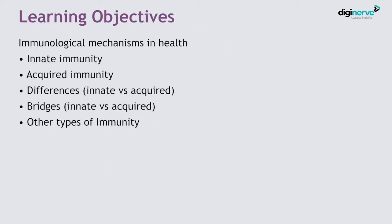Hello students, welcome to today's session. We are going to start today's immunology section, and today will be the first session of immunology, that is immunity. The learning objectives of today's session include: we will discuss the various types of immunity like innate immunity, acquired immunity, the differences between innate and acquired immunity, the various bridges that connect innate immunity to acquired immunity, and also various other types of immunity like local immunity and adaptive immunity.